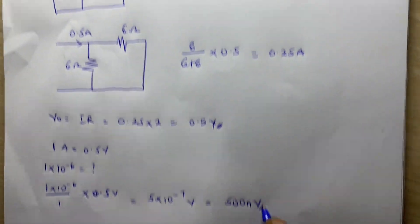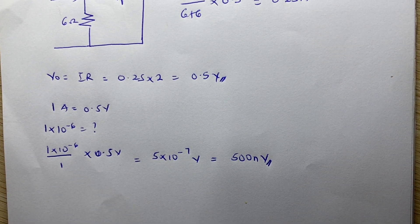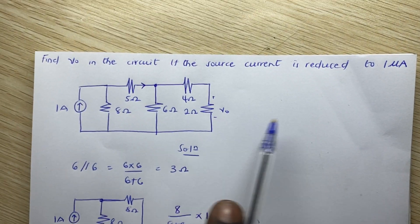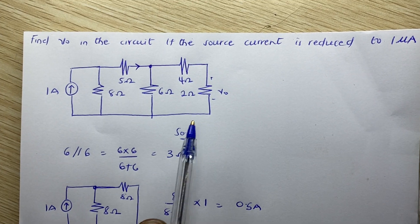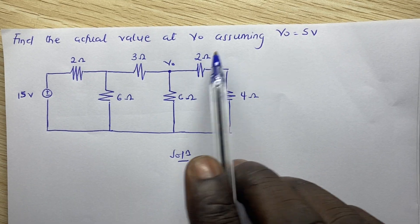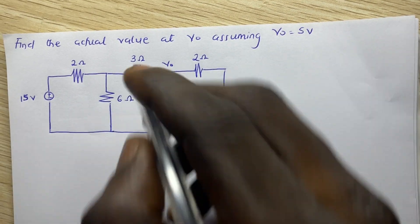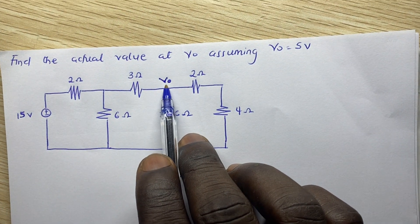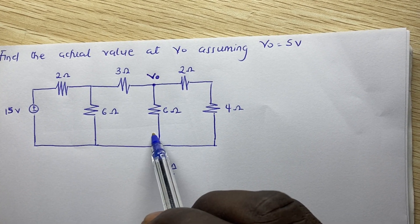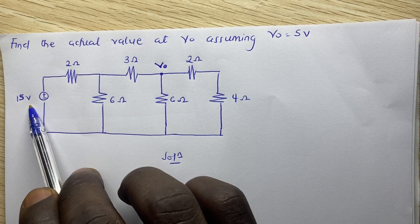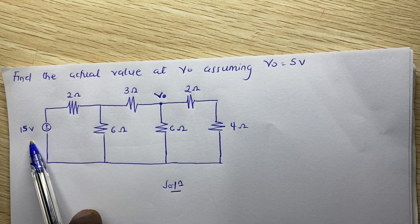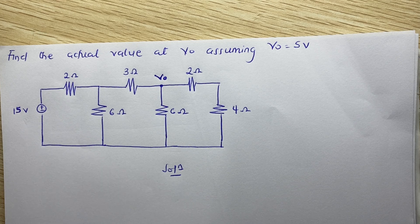Now we look at a different scenario. This time the source current is not changed; instead, v_naught is given a value and we use it to find the actual v_naught. We need to find the actual value of v_naught assuming v_naught equals 5 volts, given a 15 volt source. Since we are assigning v_naught a value of 5 V, the source voltage can't be 15 V — it has to change accordingly.